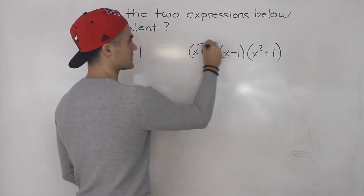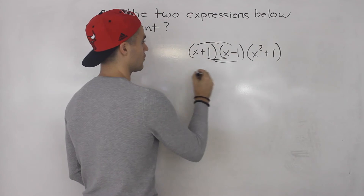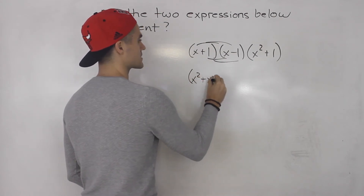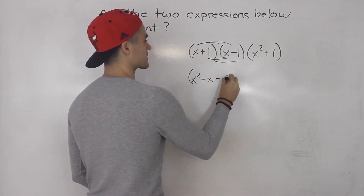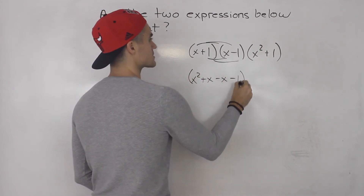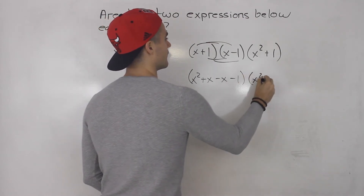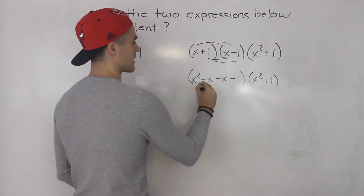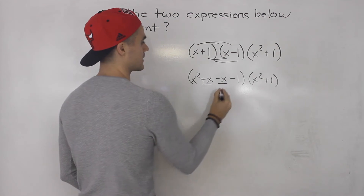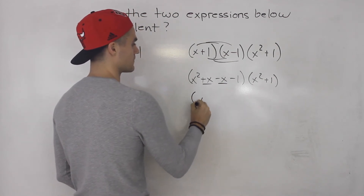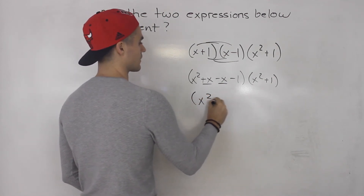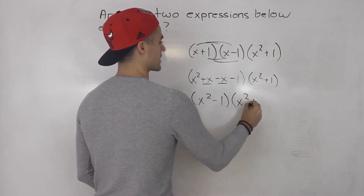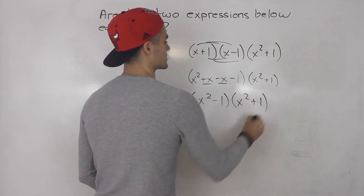Starting off with these two brackets, if we FOIL them we would end up with x squared plus x minus x minus 1. That there is a difference of squares — notice that plus x minus x nets out to 0. So we're left with x squared minus 1 times x squared plus 1.